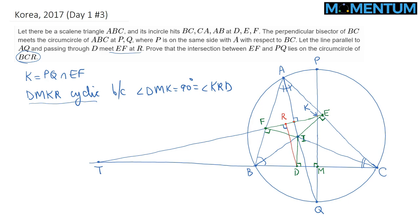And because our quadrilateral DMKR is cyclic, this implies that by power of a point, TR times TK is equal to TD times TM. And notice that we would like to show that the circumcircle of BCR goes through K, suggesting that we need to also show that TR times TK is indeed equal to TB times TC.